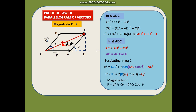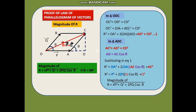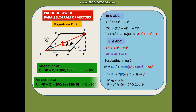So the magnitude of R is equal to the square root of P² + Q² + 2PQ cosθ. If theta is less than 90 degrees, R = √(P² + Q² + 2PQ cosθ). But if theta is greater than 90 degrees, R = √(P² + Q² − 2PQ sin(180° − θ)).